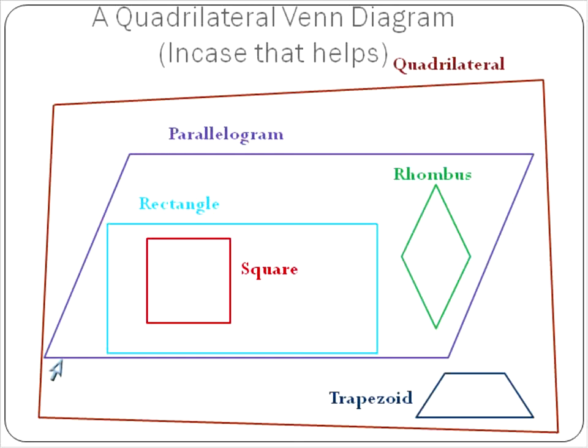The parallelogram, I'm going to keep pretty big because a parallelogram has many shapes that fit inside of that. Trapezoid is kind of on its own. Sorry, Trap. But a rectangle, as you can see, is a type of parallelogram. And a rhombus is a type of parallelogram. A square is a type of rectangle and a type of parallelogram and a type of quadrilateral. So it'll be in the very center there.